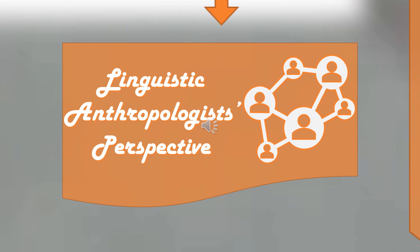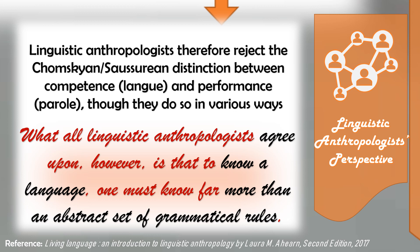Linguistic anthropologists reject the Chomskyan and Saussurean distinction between competence or langue and performance or parole, though they do so in various ways. Some deny the existence of any distinction at all between competence and parole, while others give primacy to performance or parole. Still others expand the definition of competence to include the ability to use language skillfully and appropriately in particular social contexts, and many view competence and performance — langue and parole — as equally important.